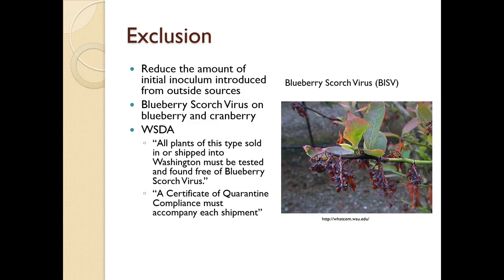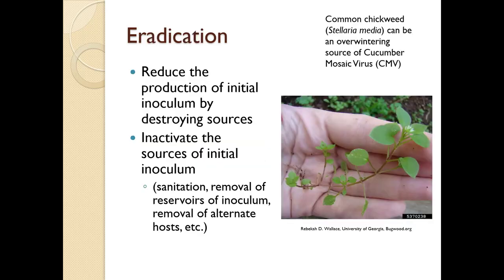Exclusion involves reducing the amount of initial inoculum introduced from outside sources. For example, blueberry scorch virus affects blueberry and cranberry, so anything brought into Washington State must have a certificate of quarantine compliance accompanying each shipment. Washington also requires this when sending plants out of state.